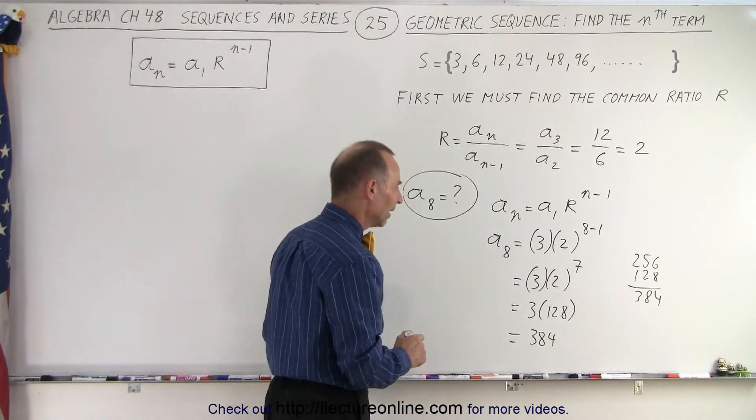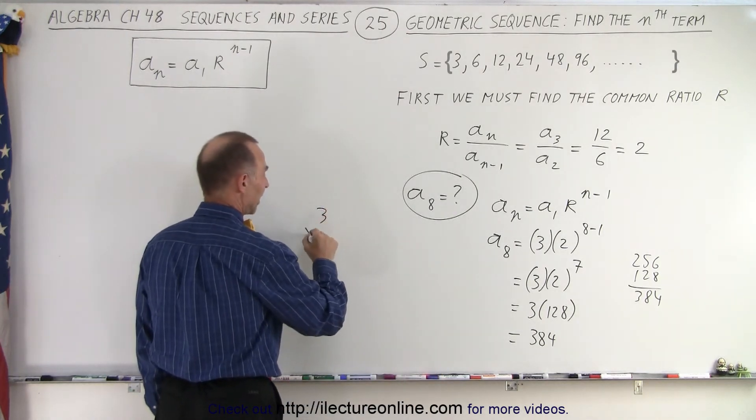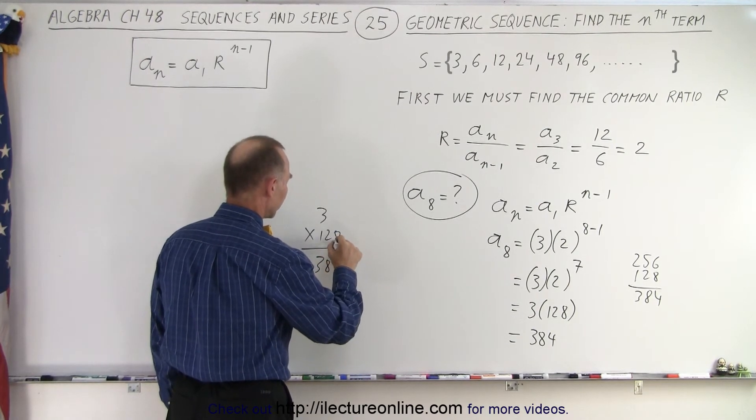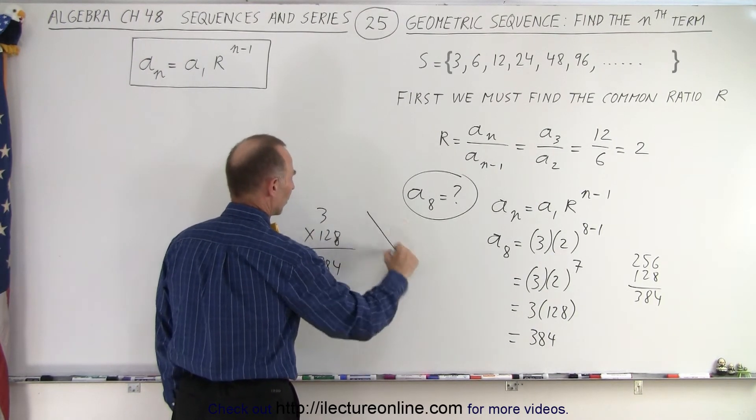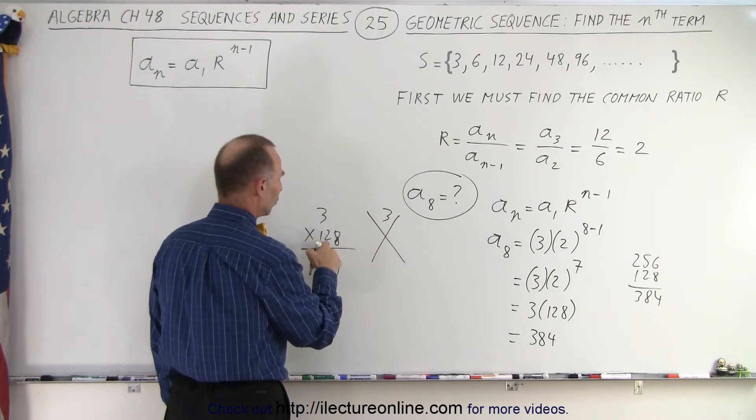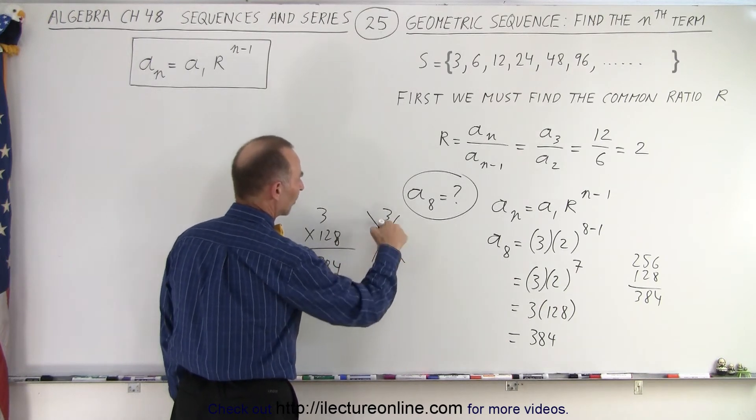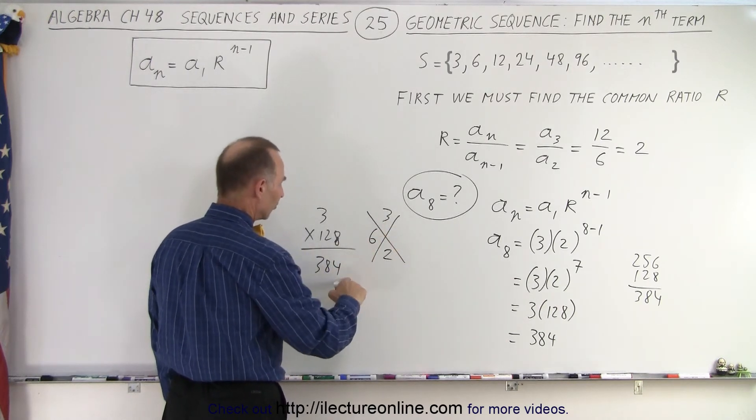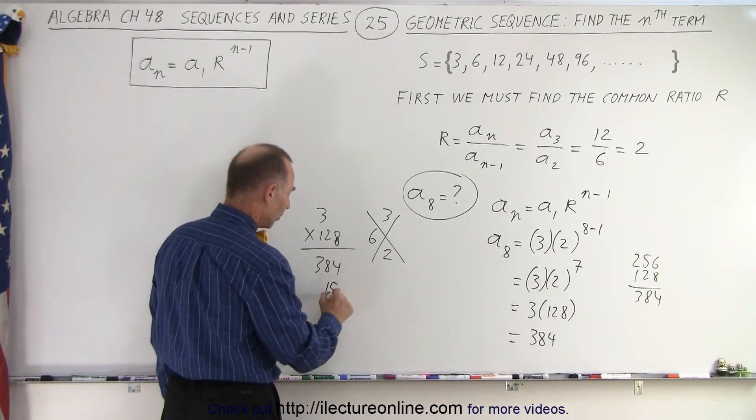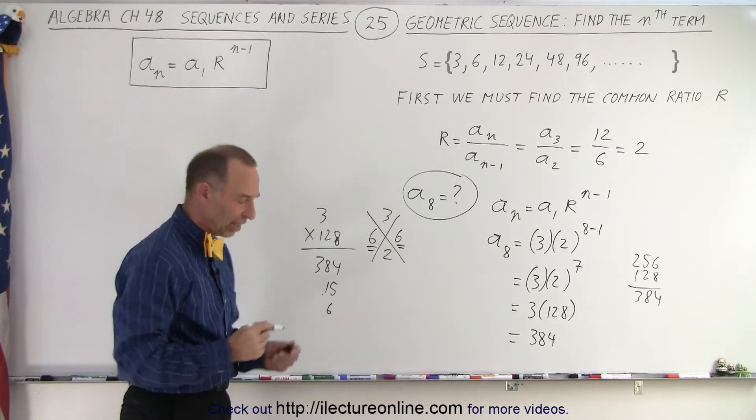I just did a quick check and it was correct. You want to know how that quick check is done? Like this. 3 times 128 we said was 384. So here I have the number 3. Here I add the numbers together. 1 plus 2 is 3 plus 8 is 11. That's 1 plus 1 which is 2, 2 times 3 which is 6. Add all these numbers together we should get 6. 3 plus 8 is 11 plus 4 is 15, 1 plus 5 is 6. And so that's how we know we did the multiplication correctly.